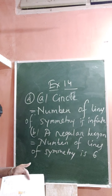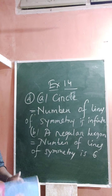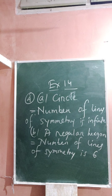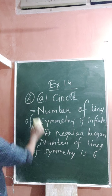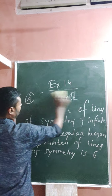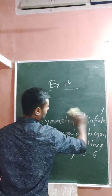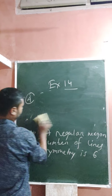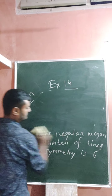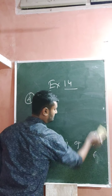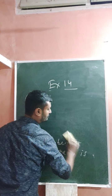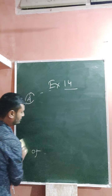Next one is a scalene triangle. In the case of a scalene triangle, there will be no lines of symmetry — the number of lines of symmetry is zero.